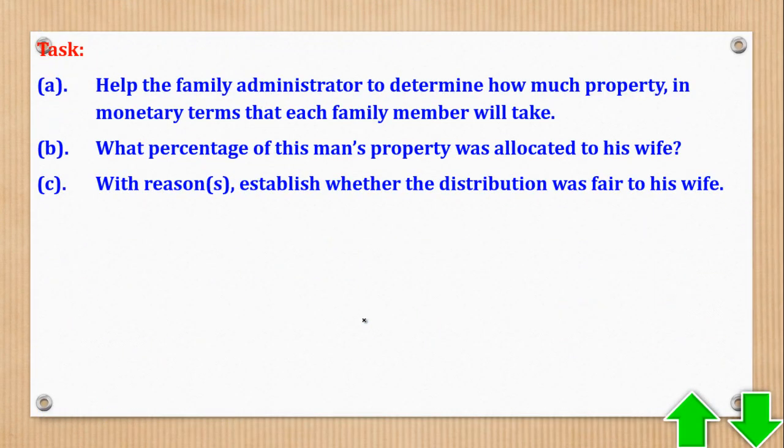Task A: Help the family administrator to determine how much property, in monetary terms, that each family member will take. Task B: What percentage of this man's property was allocated to his wife? And part C: With reasons, establish whether the distribution was fair to his wife.